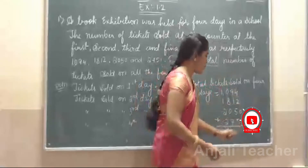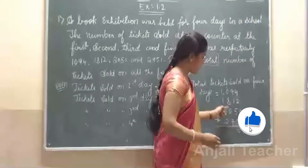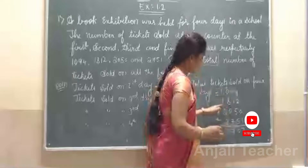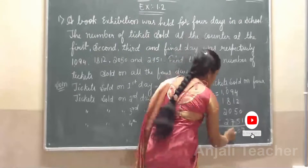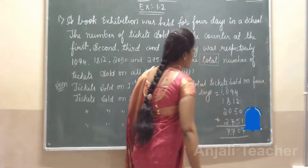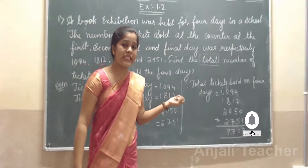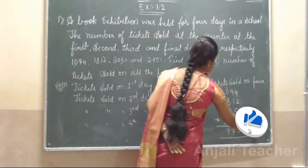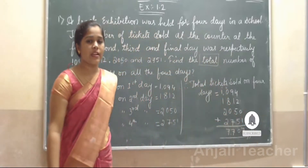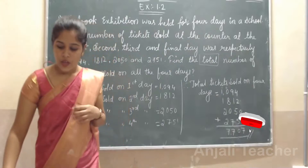4 plus 2 is 6, 6 plus 1 is 7 — that gives 7. Counting through: 1, 2, 3, 4, 5, 6, 7, 7. So total tickets sold on 4 days are 7,707. Okay, this is your answer. Therefore, 7,707 tickets were sold on the respective 4 days. Hope you understood.